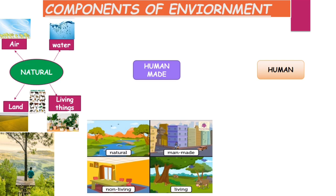There are three types of components of environment: number one, natural component; second, human-made component; third, human components. Natural components consist of biosphere (living things), lithosphere (land), atmosphere (air), and hydrosphere (water).